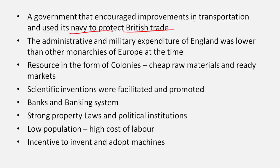A government that encouraged improvements in transportation and used its navy to protect British trade also helped. The government did not actively propose a policy for an industrial revolution — it happened by chance — but the government tried to provide a smooth path by improving transportation networks like roads, canals, and seaports.